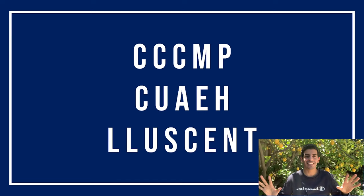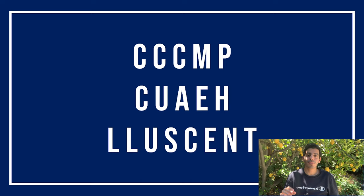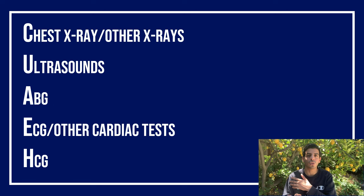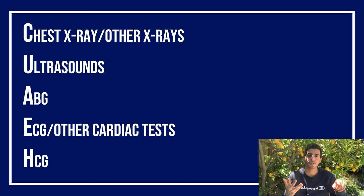Now comes the real work — we want to put in orders that give us a lot of information and are non-invasive. I modified a mnemonic from my senior to remember tests I usually forget: C-C-C-M-P-C-U-A-E-H-E-L-L-U-S-C-E-N-T. CBC, CMP, creatine phosphokinase, magnesium and phosphate — those are easy. Chest X-ray or any X-ray depending on what you need. Ultrasonography — could be pelvic, vaginal, or abdominal. ABGs for any patient with respiratory distress. ECG for any patient with a cardiac problem or suspected arrhythmia. With ECG you can also remember ECHOs and cardiac enzymes.